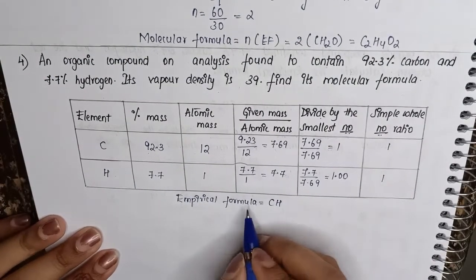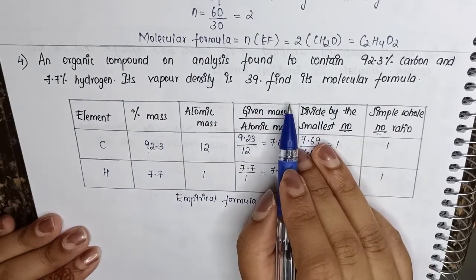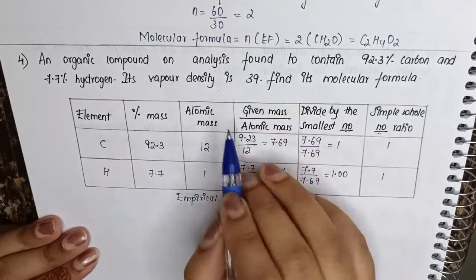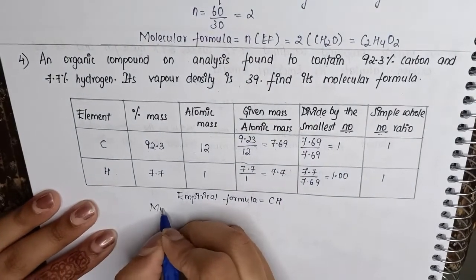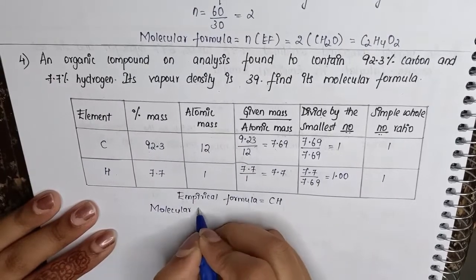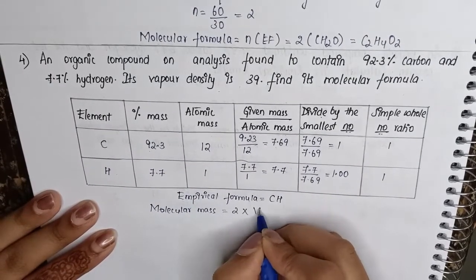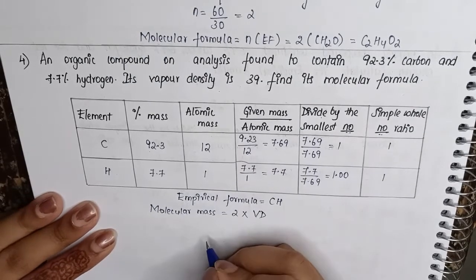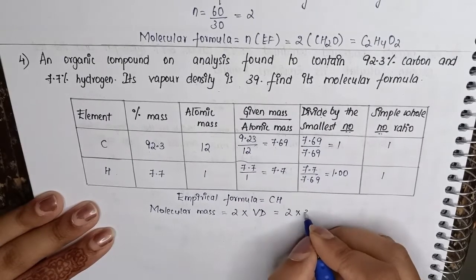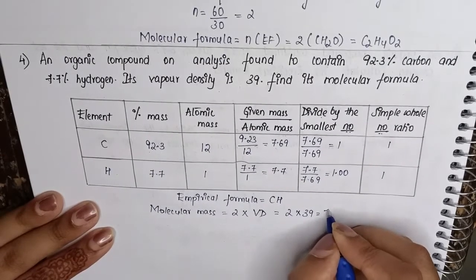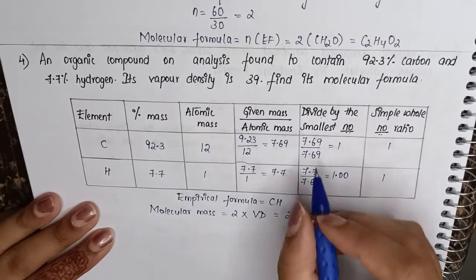Now since we are given vapor density here, but we need molecular mass, we have to convert this vapor density into molecular mass. So molecular mass is equal to 2 into vapor density. This will be equal to 2 into 39, which is given to us in the question, which will be equal to 78. That is the molecular mass.